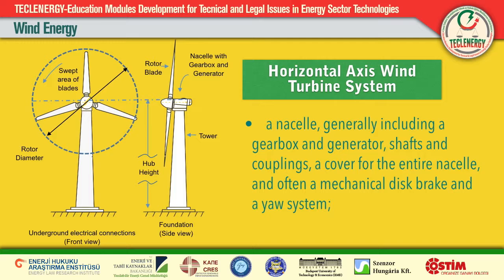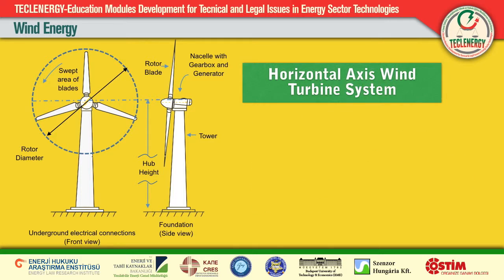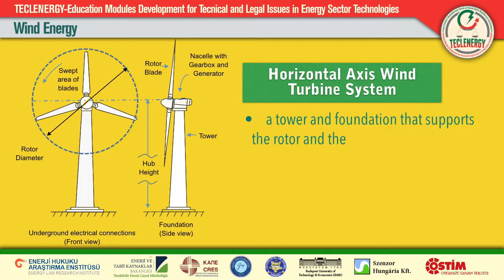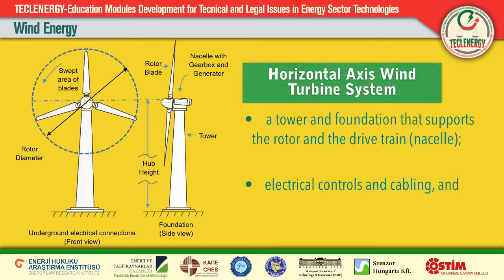The nacelle houses the turbine's drive train and generator assemblies, plus the yaw mechanism and any control components. The tower of a wind turbine supports the nacelle assembly, which may weigh many tons, and elevates the rotor to a height at which wind velocity is significantly greater and less perturbed than at ground level, due to the wind shear effect. In areas with high terrain roughness it is an advantage to have a tall tower, since rotor blades on turbines with relatively short towers will be subject to very different wind speeds when a blade is in its top and bottom positions, which increases fatigue loads on the turbine.